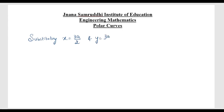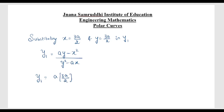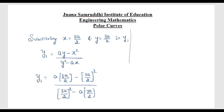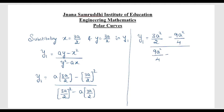Substituting x = 3a/2 and y = 3a/2 into the y1 expression: y1 = [a·(3a/2) − (3a/2)²] / [(3a/2)² − a·(3a/2)]. This gives y1 = [3a²/2 − 9a²/4] / [9a²/4 − 3a²/2]. Taking LCM of 4: